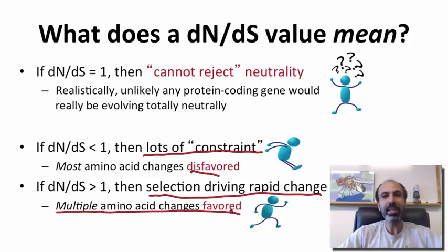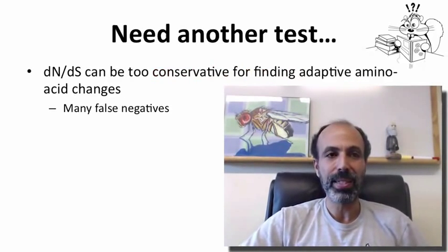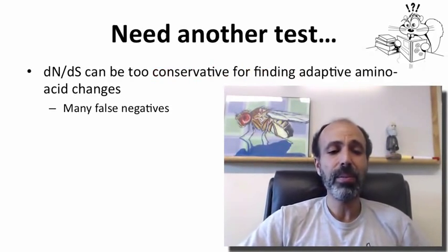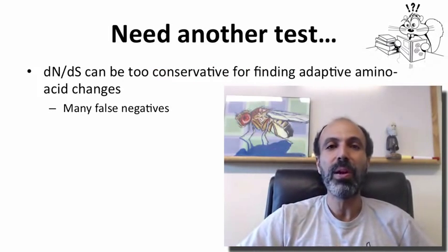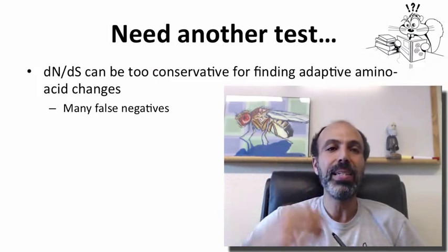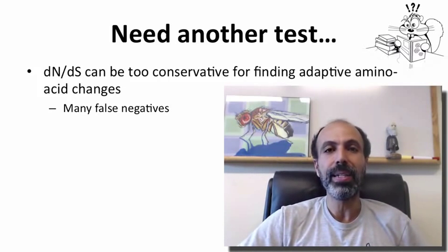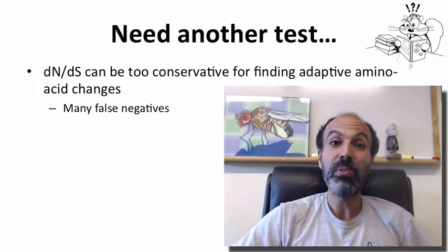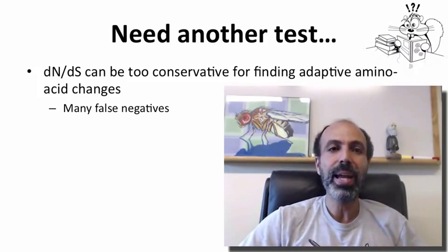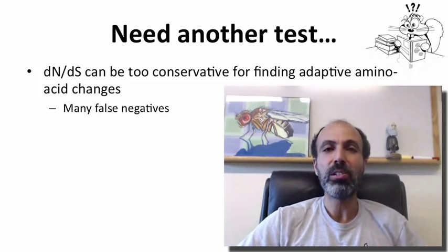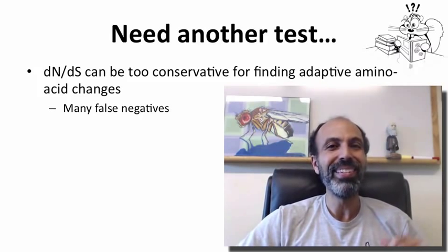This is not entirely satisfying. We basically need another test because dN/dS can end up being a little too conservative, especially if you're looking for those adaptive amino acid changes with a high dN/dS value — you'll have way too many false negatives. In the next video, we'll look at a test that is a little better at catching these kinds of adaptive amino acid changes, referred to as the McDonald-Kreitman test. Hope you'll join us.